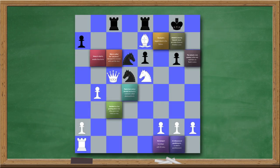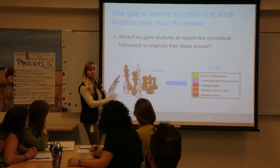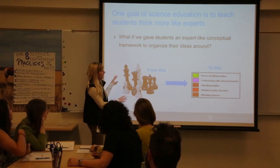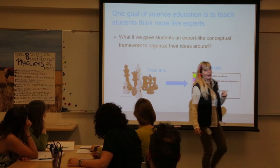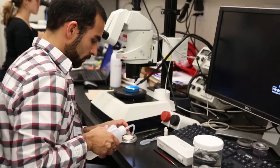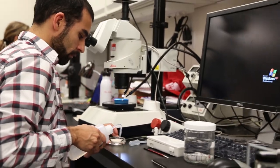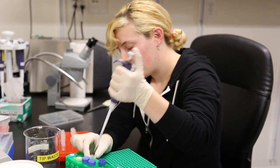This relates to the chess metaphor we use in a different activity. The CCCs directly provide this framework. They're consistent across the K-12 curriculum and into how science is practiced in today's laboratories and universities.